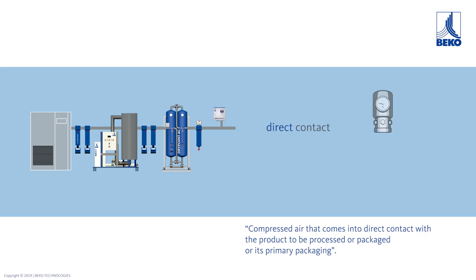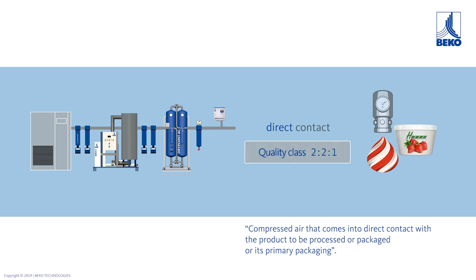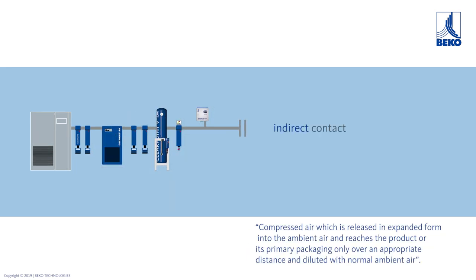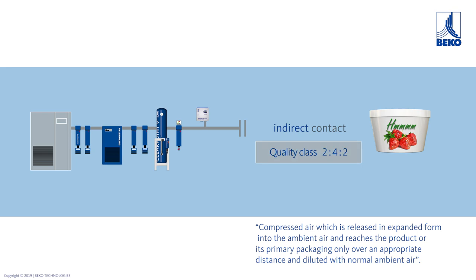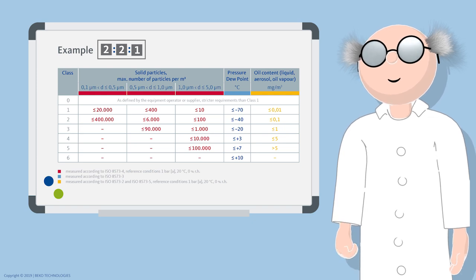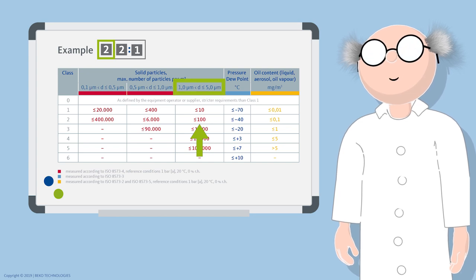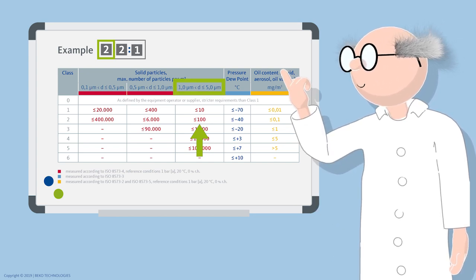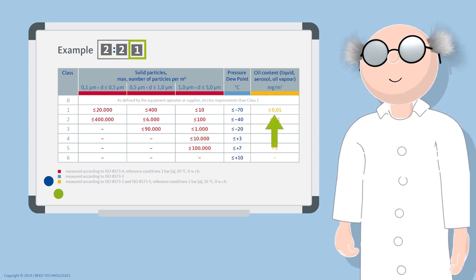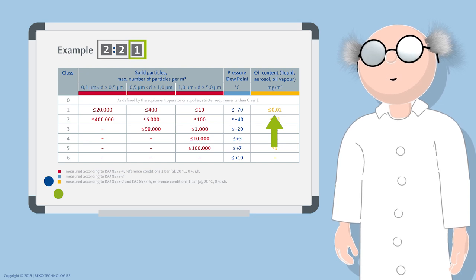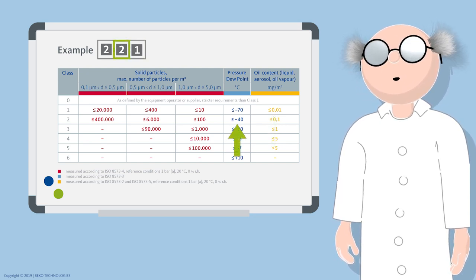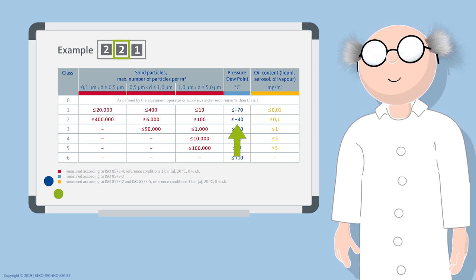In the case of direct contact between product and compressed air, quality class 2-2-1 is recommended. In the case of indirect contact, the recommendation is class 2-4-2. With a compressed air quality of 2-2-1, there may be fewer than 100 particles with a size of 1 to 5 micrometers in one cubic meter of compressed air. The residual oil content is limited to a maximum of 0.01 milligrams per cubic meter, and a pressure dew point of minus 40 degrees Celsius is required.